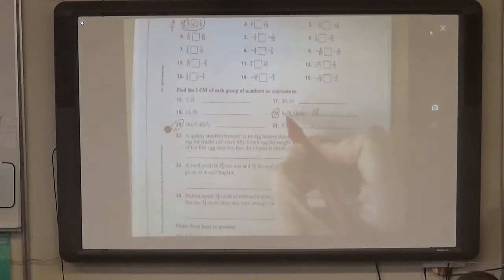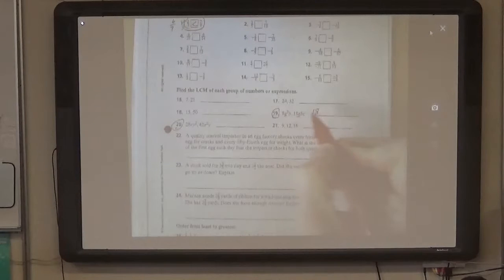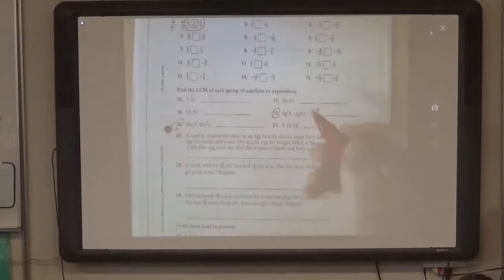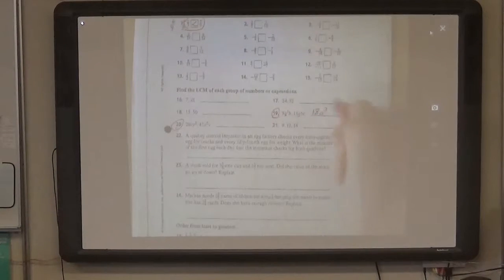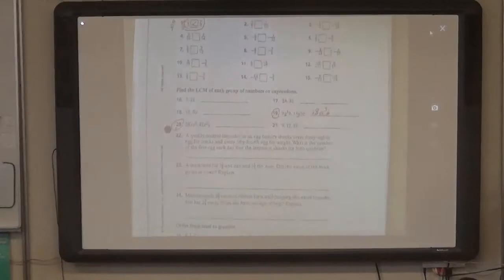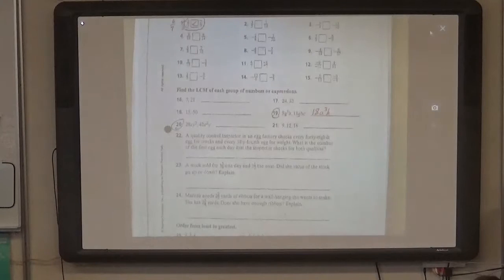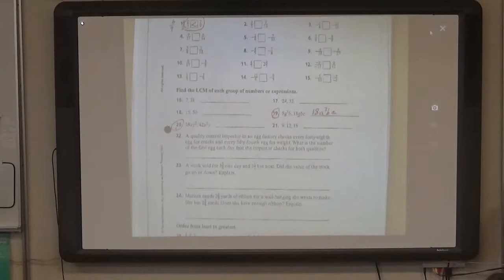Now, you also use the greatest power of each of the factors. So, the variables. There's an A to the third power and an A to the first power. Which one should we put in our answer? A to the third power. Yay! How about B and B? B to the first and B to the first. Just B to the first. Just B. And there's also a C, so we have to put that in the formula. And that's it.